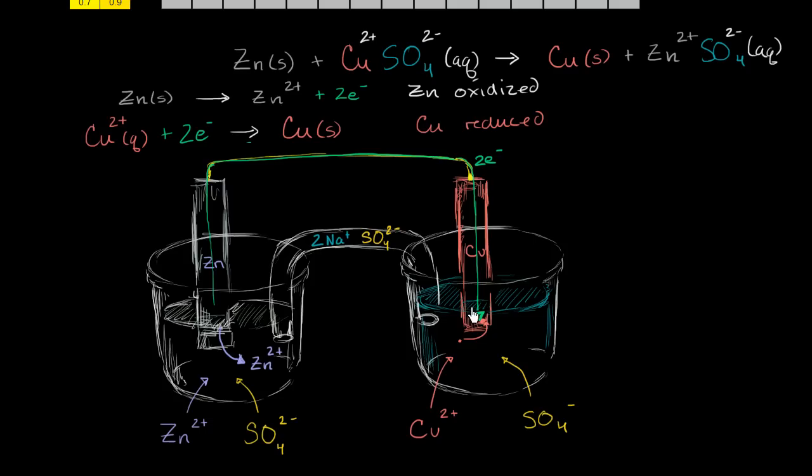Now you might be saying, look, if more and more positive things, if more and more of this positive zinc is flowing in this, wouldn't this make this an imbalance? And if this solution becomes too positive, then the electrons wouldn't want to leave as much anymore. So if this starts becoming very, very positive.